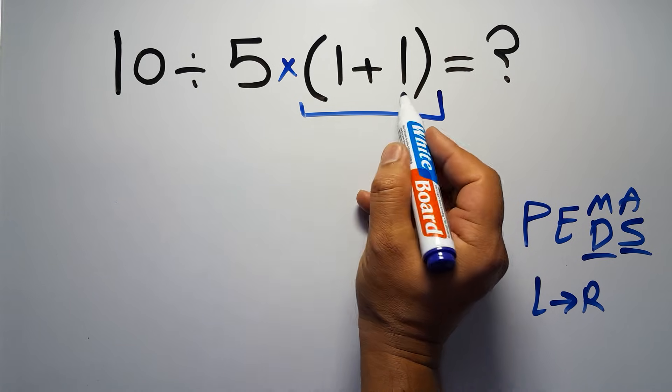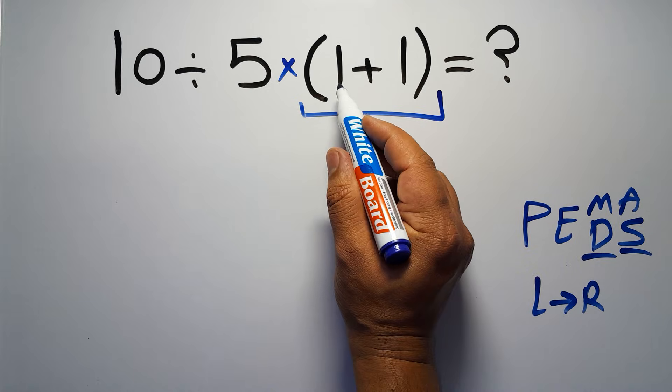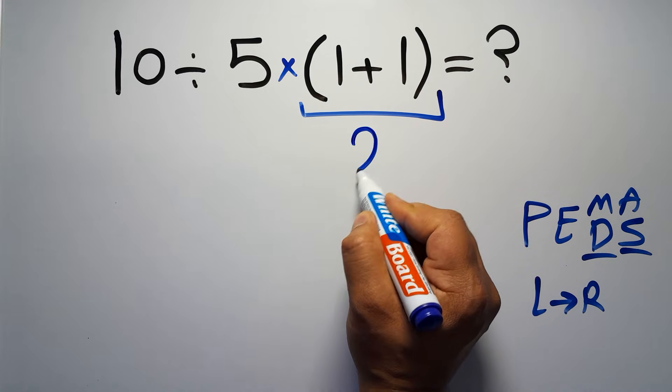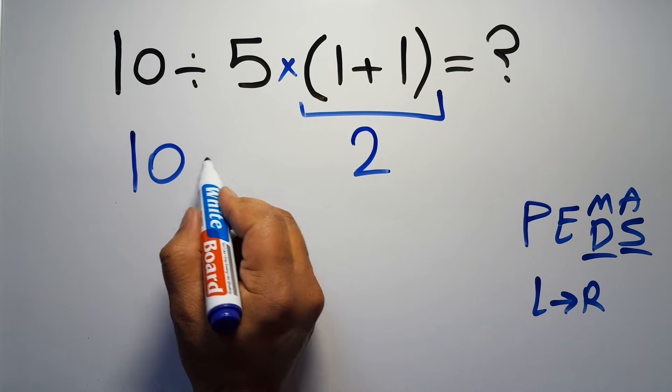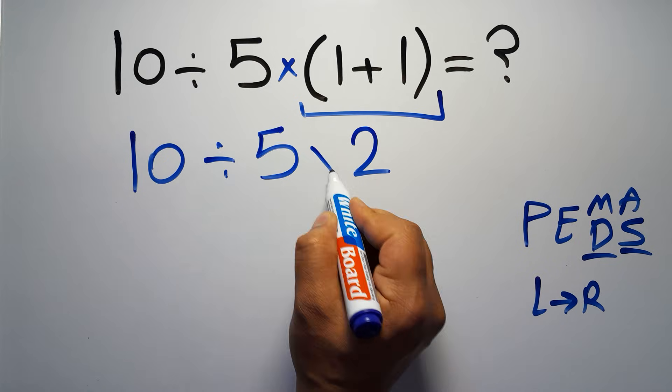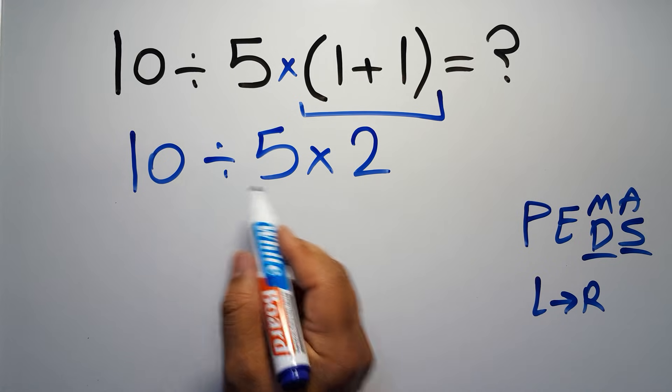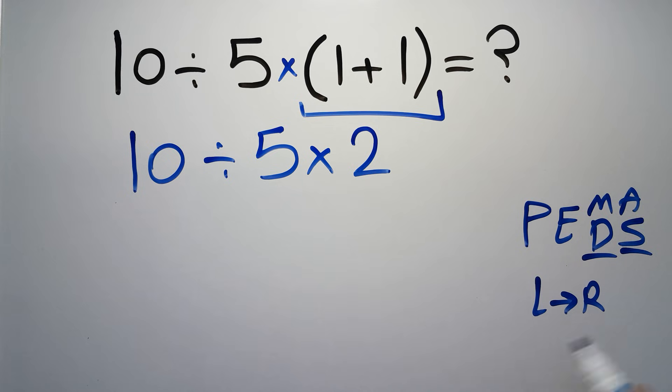So first, the parentheses. Inside the parentheses we have 1 plus 1, which equals 2, so 10 divided by 5 times 2. Now we have one division and one multiplication. As I said, multiplication and division have equal priority and we have to work from left to right.